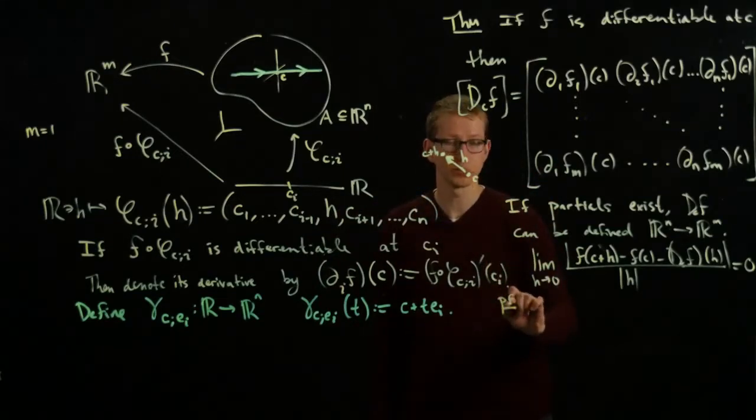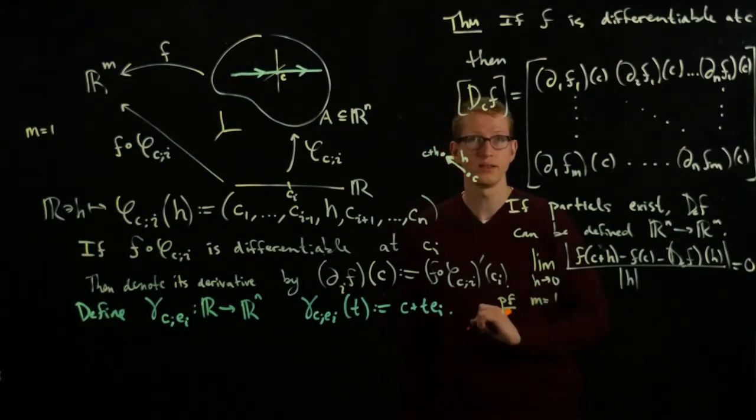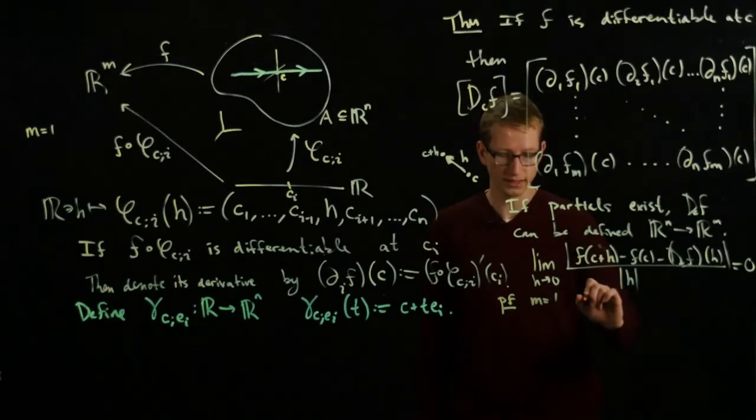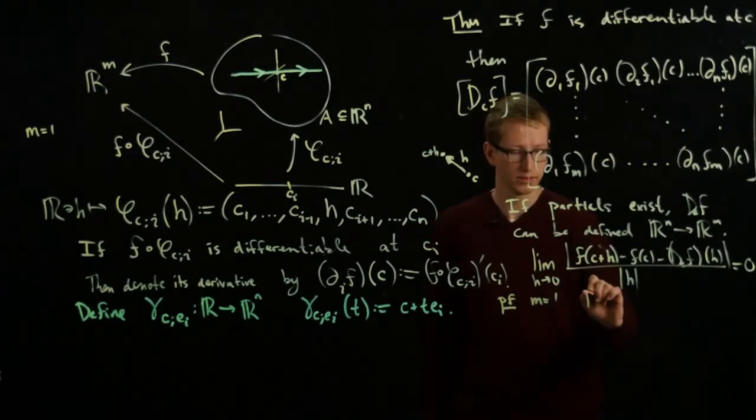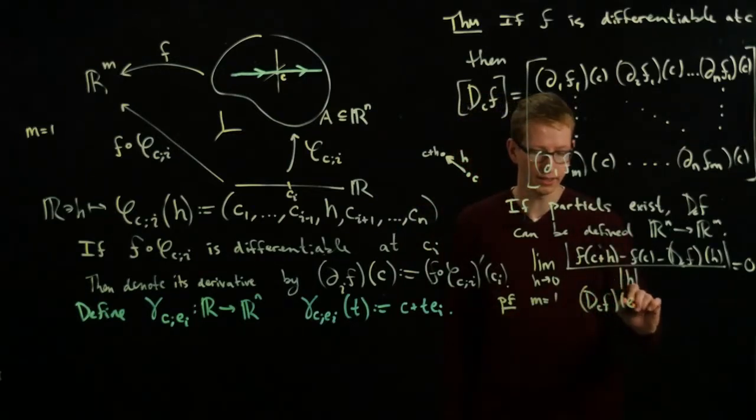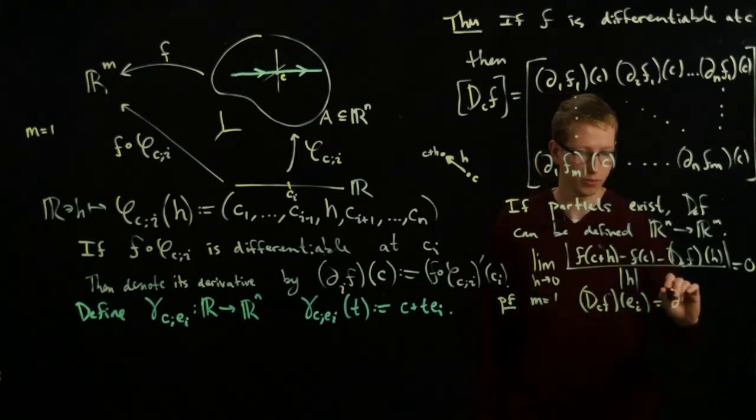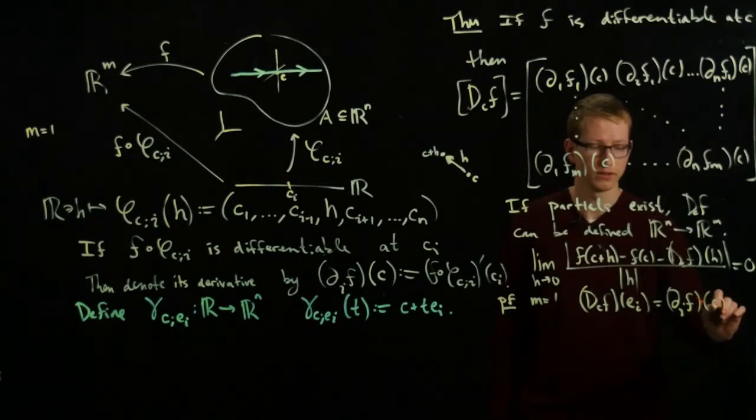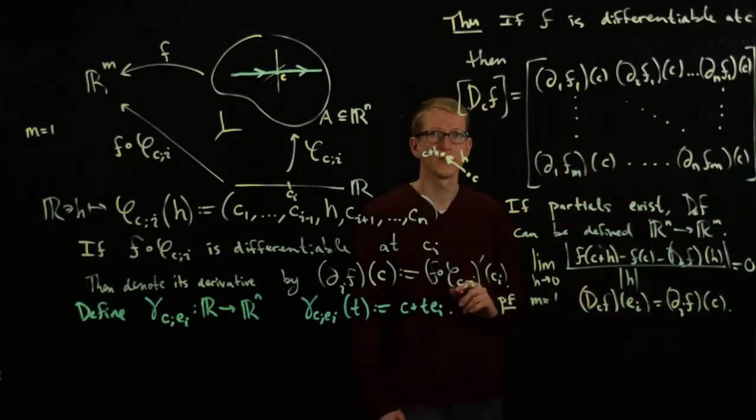I sort of feel like giving a little proof of this. Let's just give a proof sketch in the case where m equals 1. When m equals 1, what the claim is saying is that D_C F evaluated at the vector e_i is equal to the partial derivative of F evaluated at C.